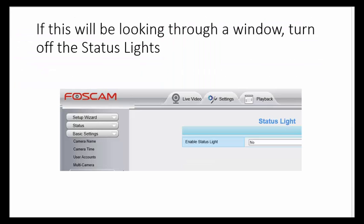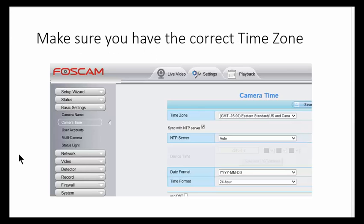After that, the only thing I'd advise is if you're going to put this camera in a window facing outwards, you might want to turn off the status light so you don't get that reflection in the glass. That's under basic settings and you'll see the status light right there. The other thing you might want to do is under camera time, make sure you have the correct time zone so the timestamp will be accurate on your camera.